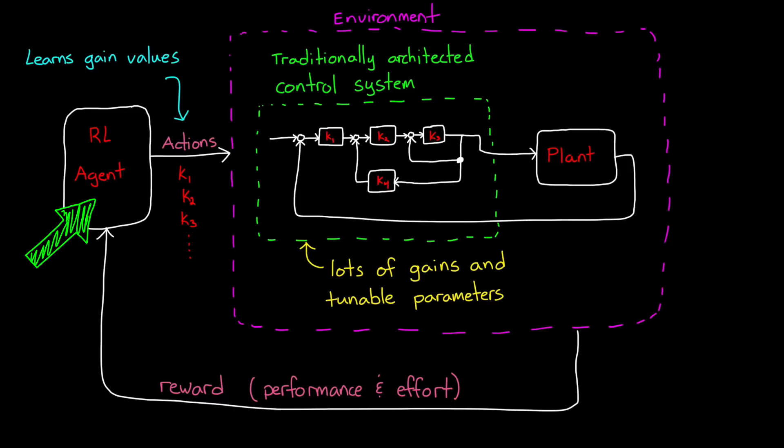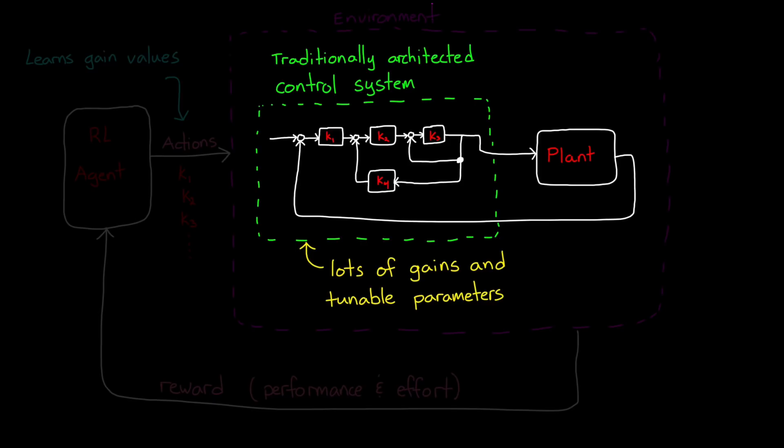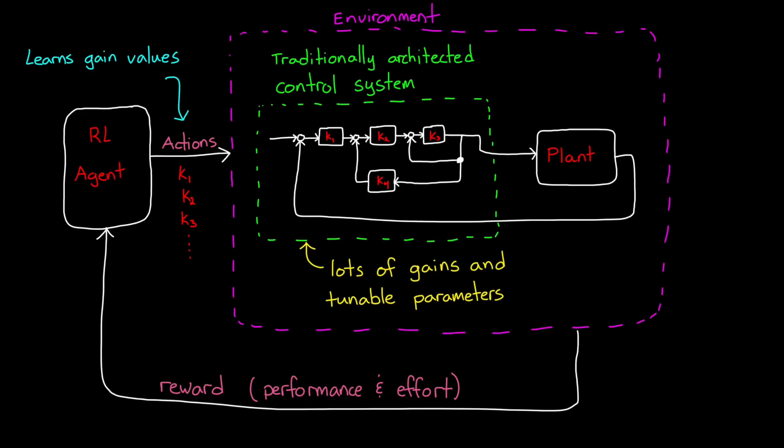So in this way, you still have a traditionally architected system, one that can be verified and manually adjusted on the hardware just like we're used to, but you populated it with gain values that were optimally selected using reinforcement learning. Sort of a best of both worlds approach.